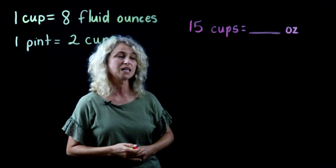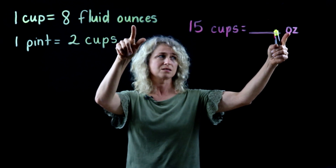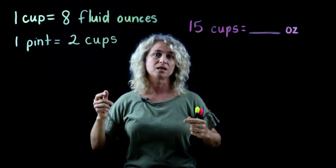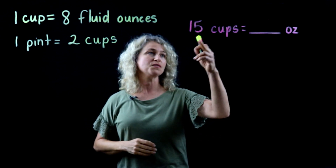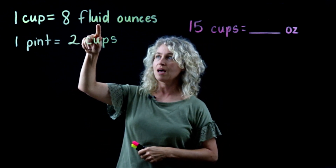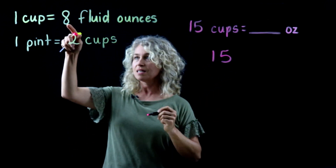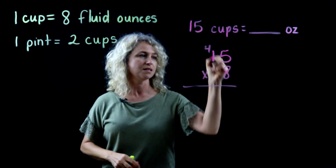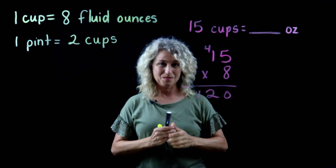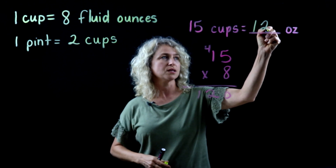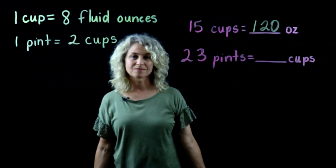Let's look at this example: 15 cups equals blank ounces. Notice that this is the abbreviation for ounce — and do not get confused with regular ounces for weight; this is fluid ounces, like liquids. We know there are eight fluid ounces in one cup, so we multiply 15 times 8. That gives us 120 fluid ounces.